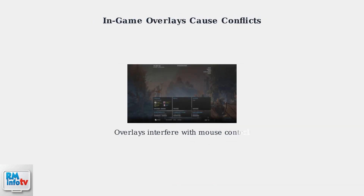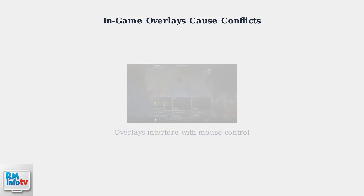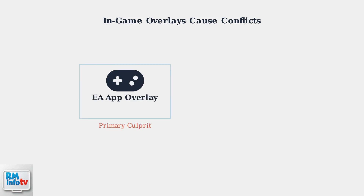The primary cause of this issue is conflicts with in-game overlays from various applications. These overlays are designed to provide helpful features but can interfere with the game's mouse control. The EA App, formerly known as Origin, has an in-game overlay that frequently conflicts with Battlefront 2's mouse handling. Discord's in-game overlay is another common source of mouse cursor conflicts, especially for players who use Discord while gaming.